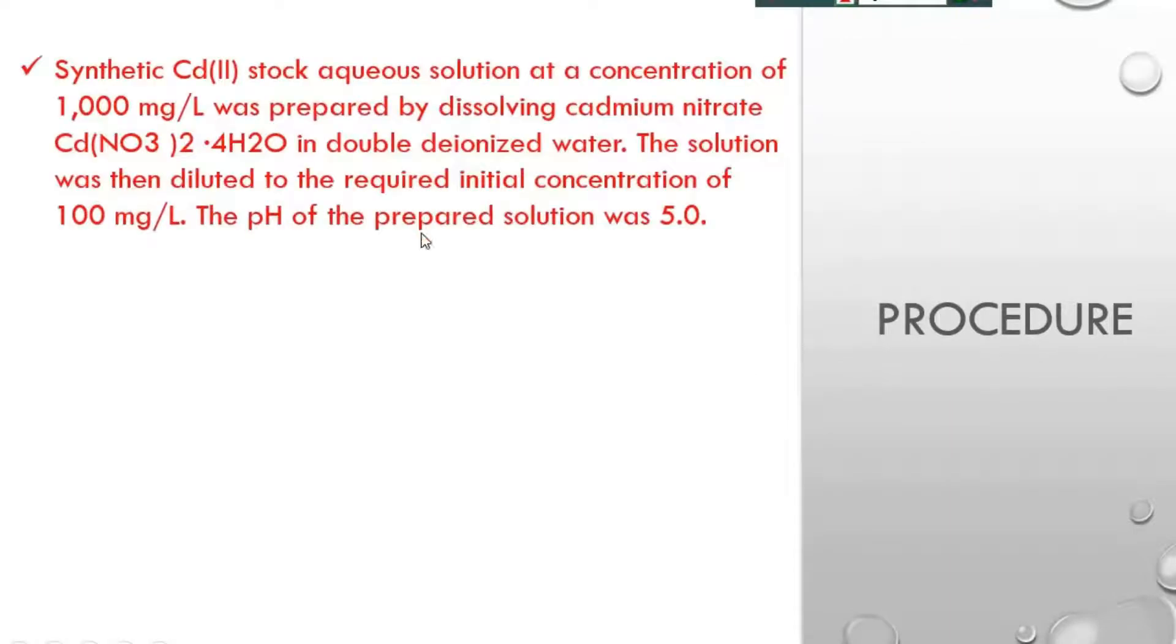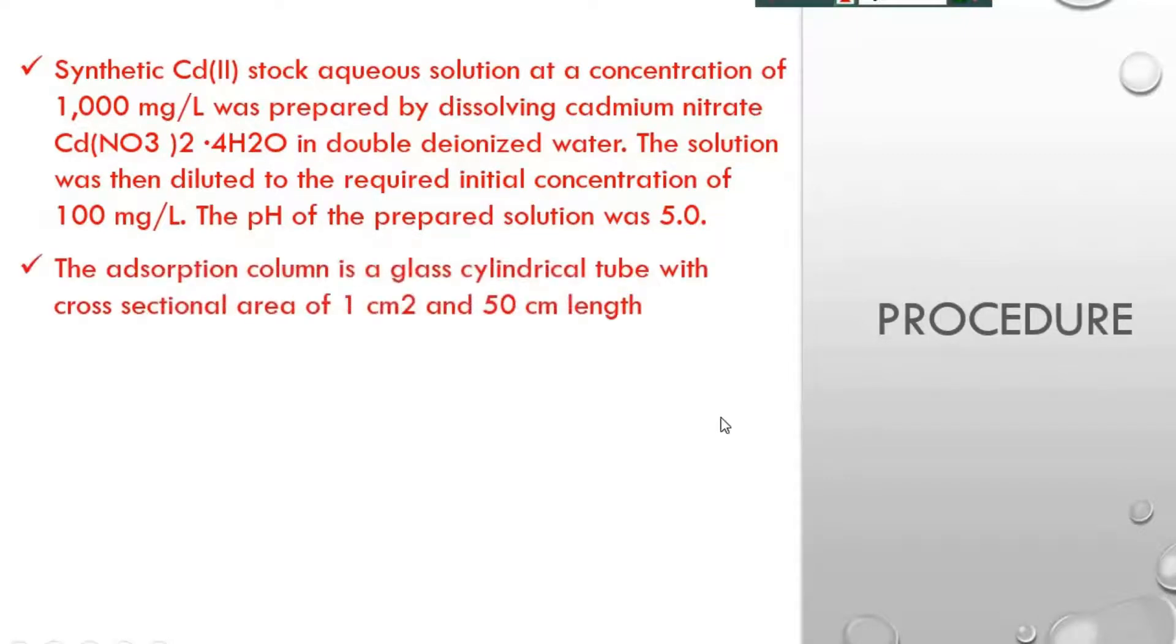Now, procedure. At first, a stock solution of cadmium-2 was prepared with 1000 mg per liter by dissolving cadmium nitrate Cd(NO3)2·4H2O in double deionized water. Then the solution was diluted to the required initial concentration of 100 mg per liter and the pH of the prepared solution was 5.0.